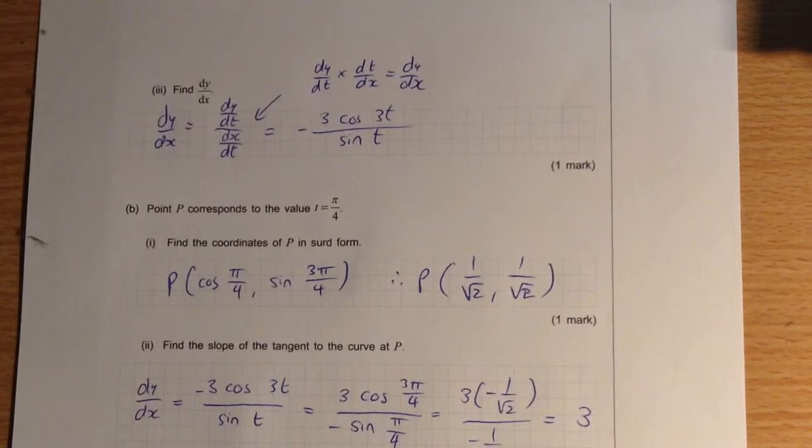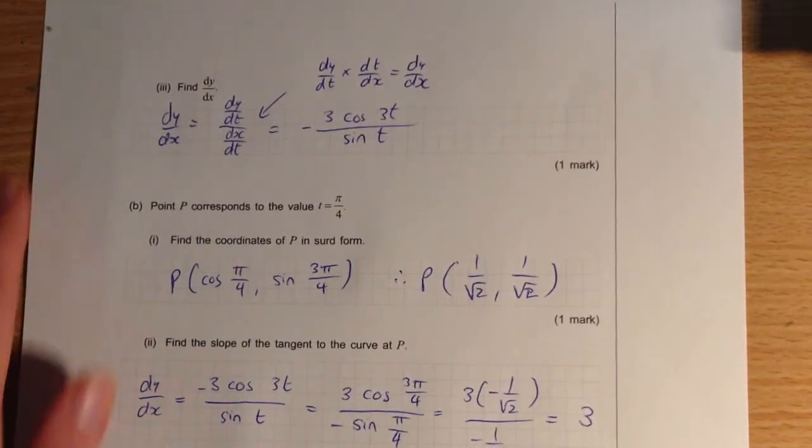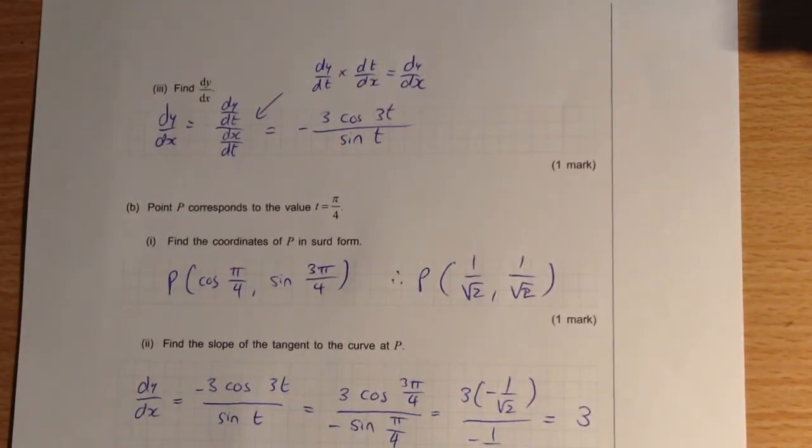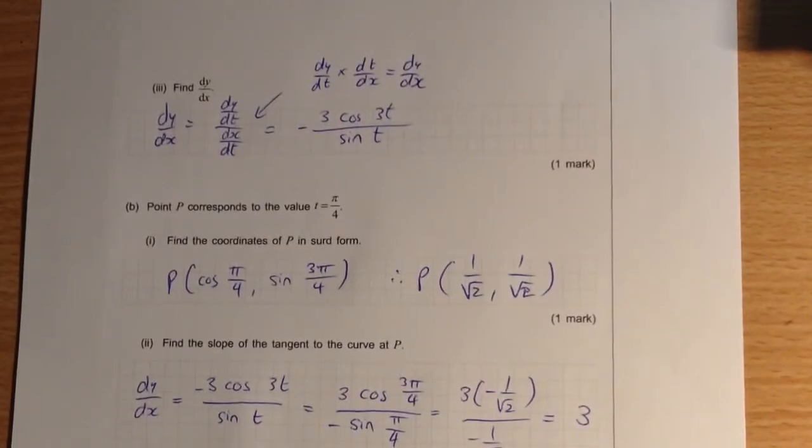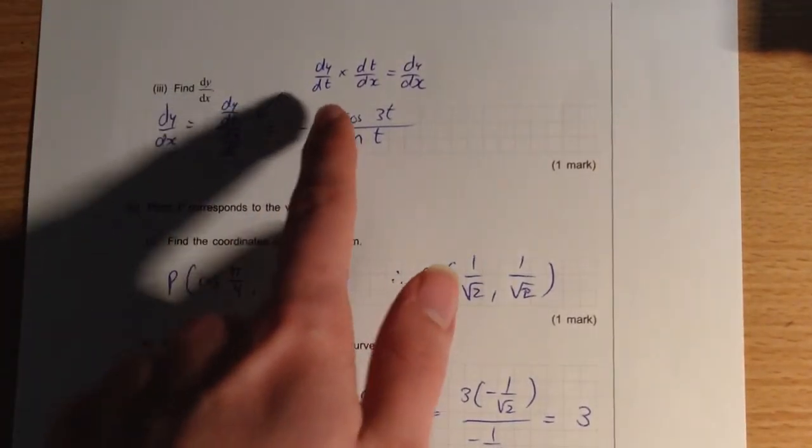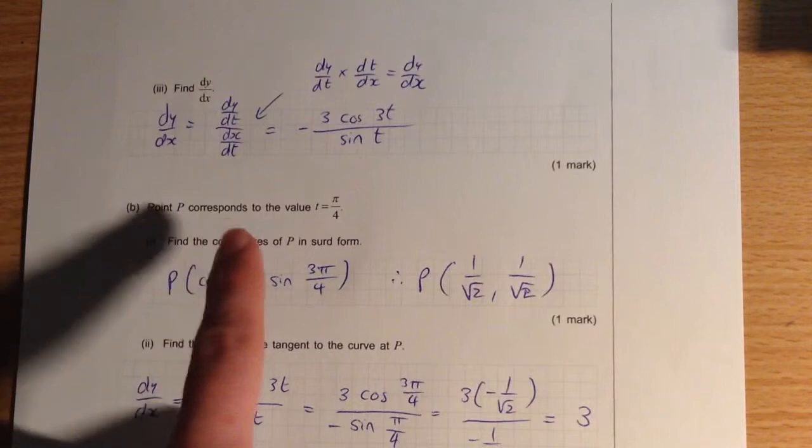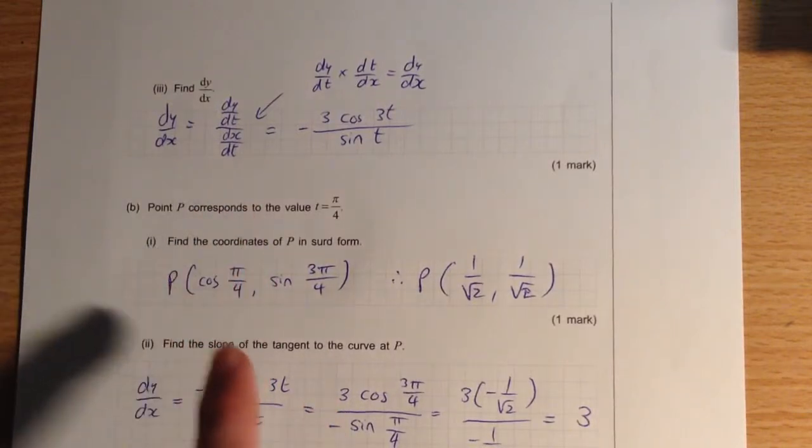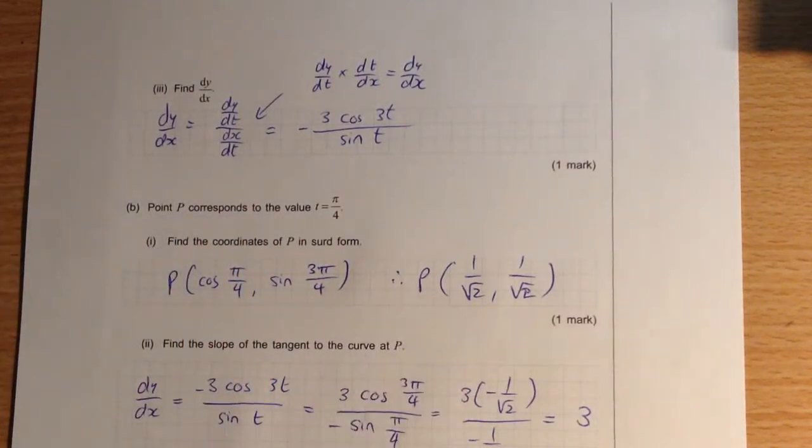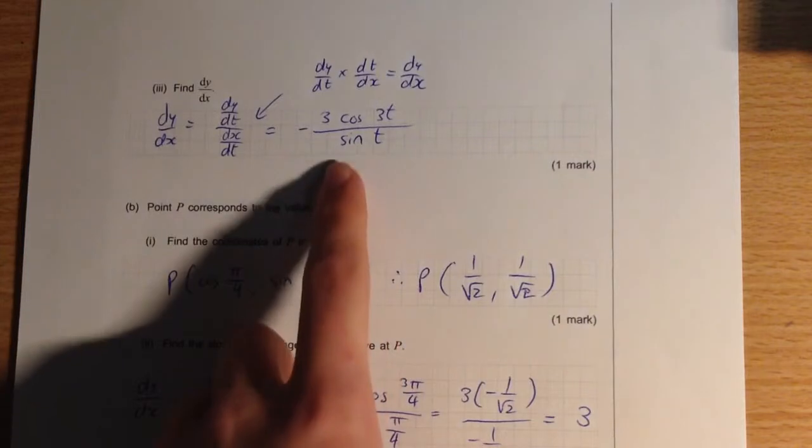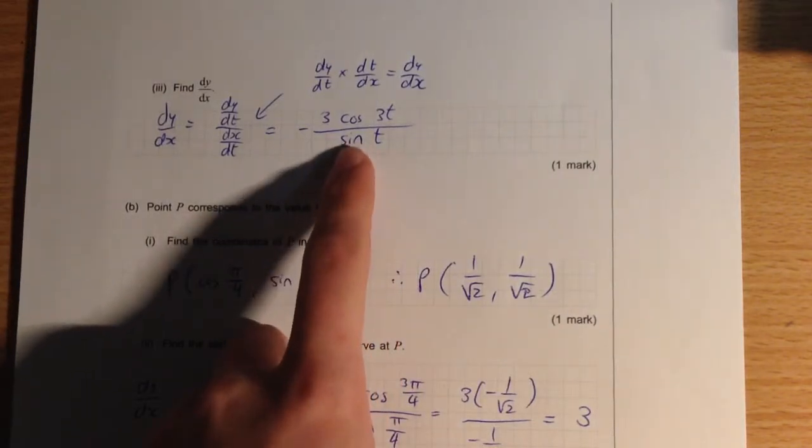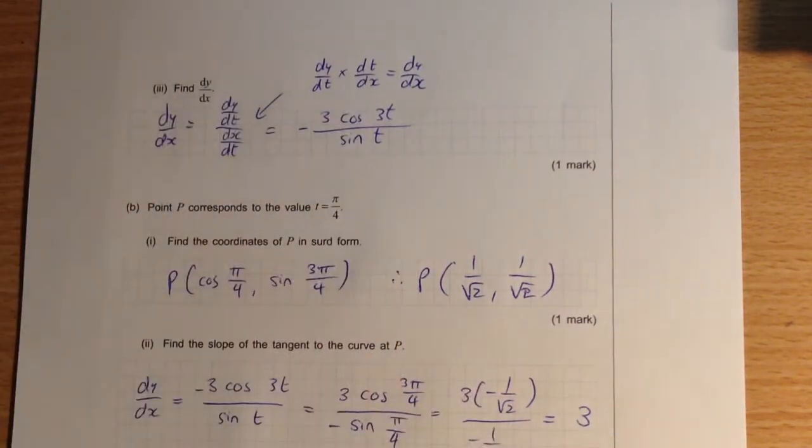So now we're asked to find dy/dx, and it's actually quite simple to do. We have dy/dt and dx/dt. We can see here, just doing a little bit of algebra to convince ourselves, if we have dy/dt times dt/dx, which is essentially the same as having dy dt on dx dt, then we end up with dy/dx. So it's simply a matter of writing dy/dt on dx/dt, as you can see here. So we use the results from i and ii of the first part of the question.